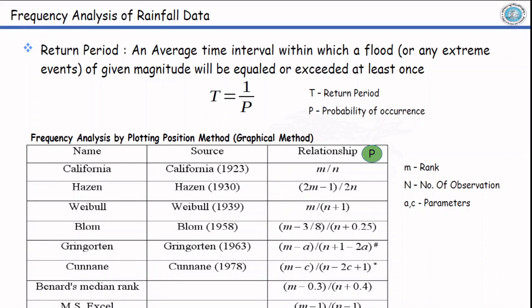In this table, you can see for the first case California, it was developed for the state of California and the relationship is m by n, where m is the rank and n is the number of observations. Highest rank is given to the highest magnitude.